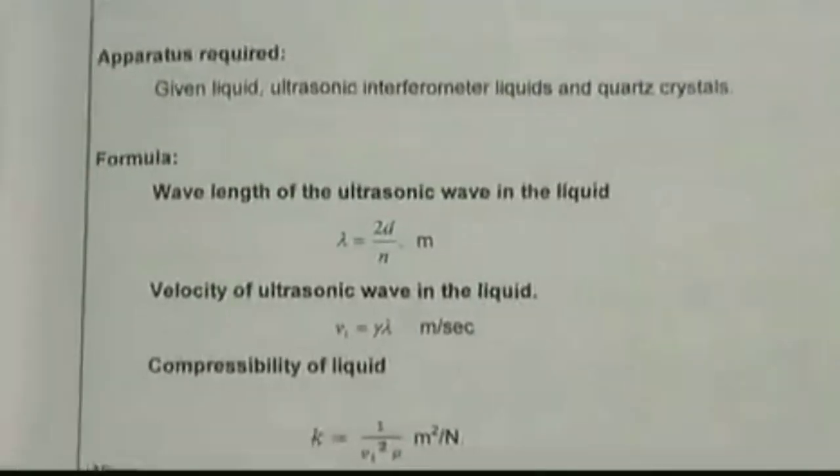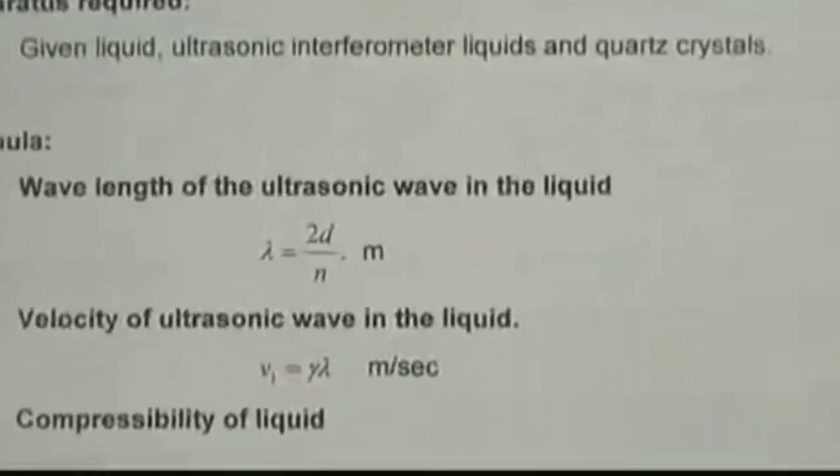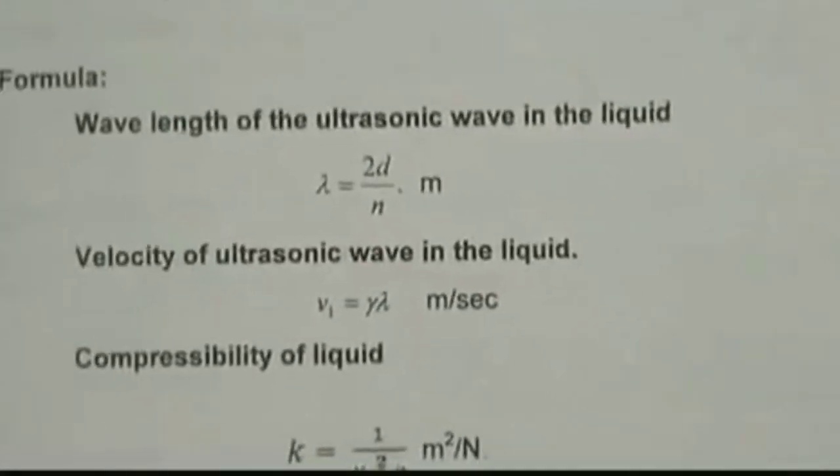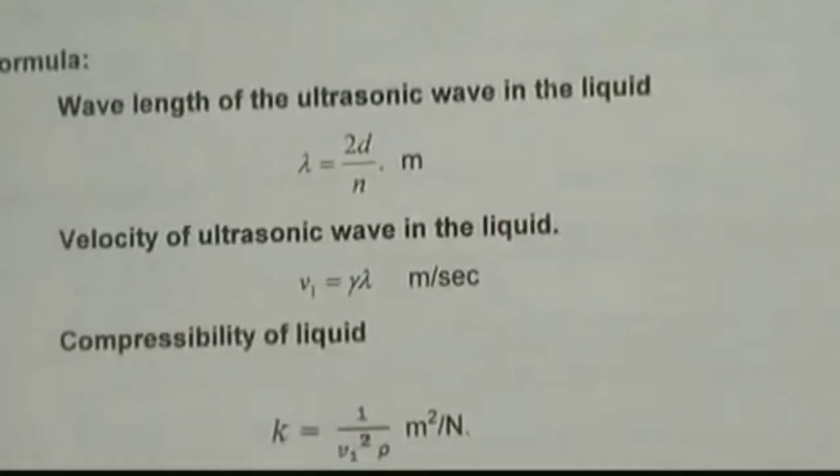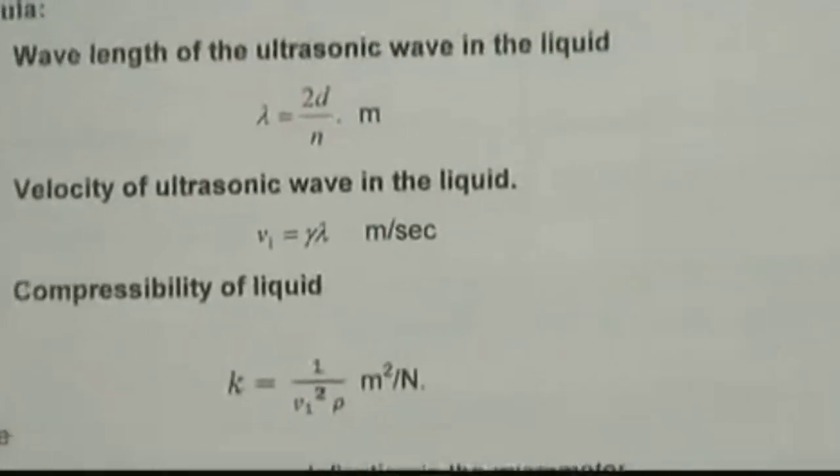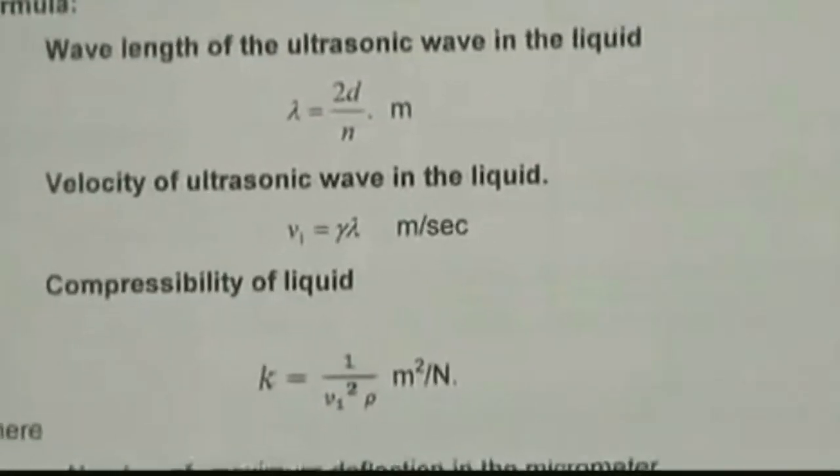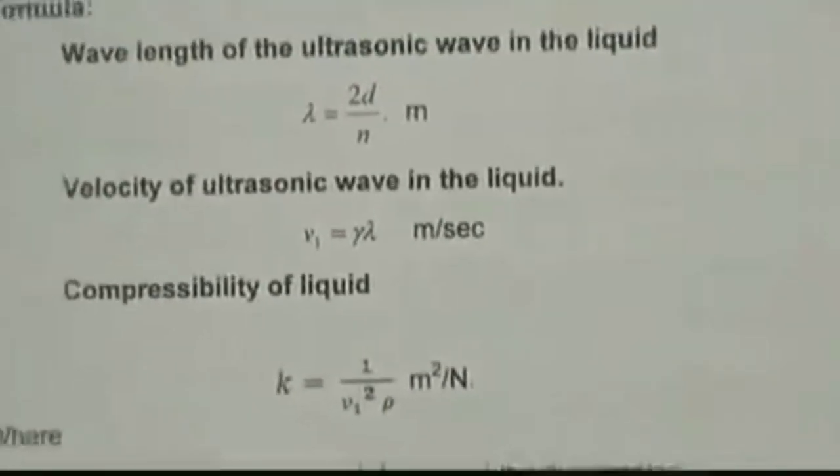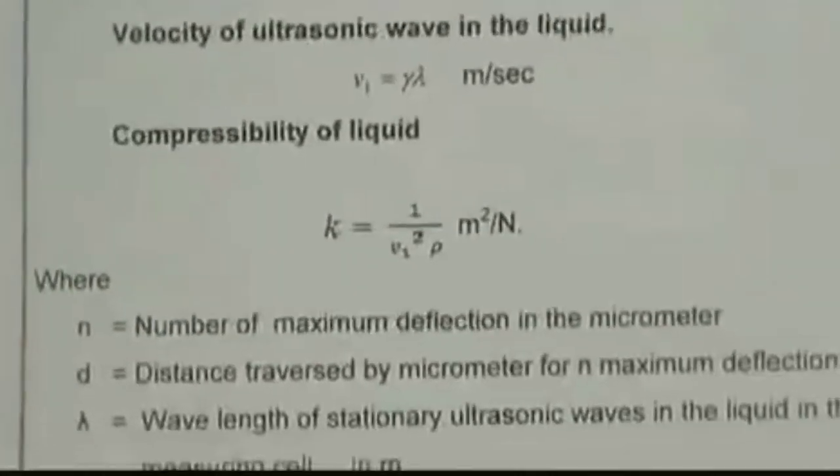The wavelength can be determined by using the tabulation. And the velocity of ultrasonic sound waves can be determined by using the formula V equals nu lambda, where nu is the frequency of ultrasonic sound waves, that is 2 megahertz frequency. And then the compressibility of the given liquid, K, that is equal to 1 by V squared into rho, where rho is the density of the given liquid, and V is the velocity of ultrasonic sound waves.